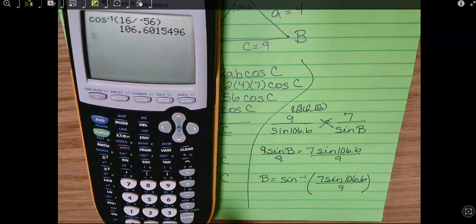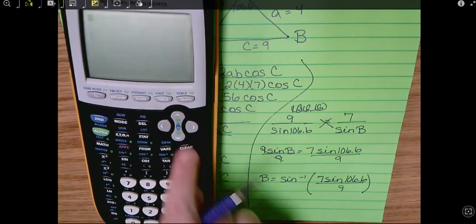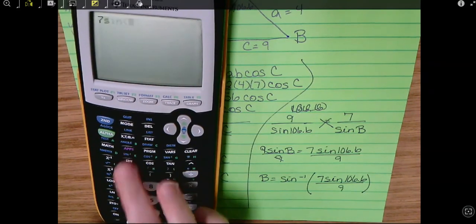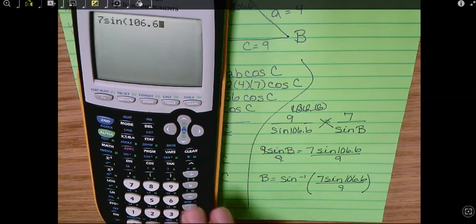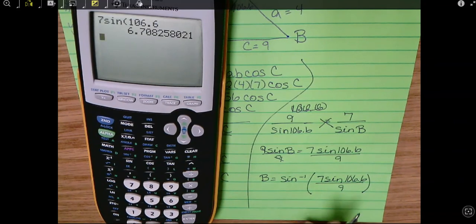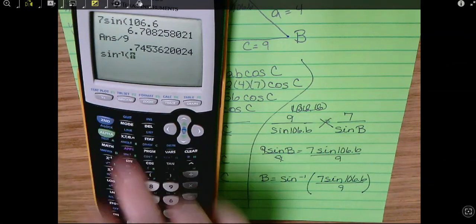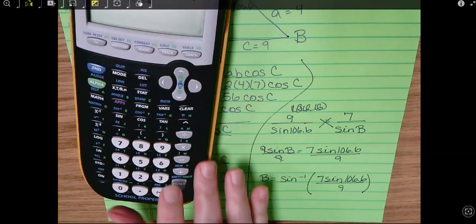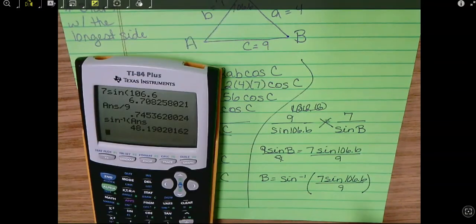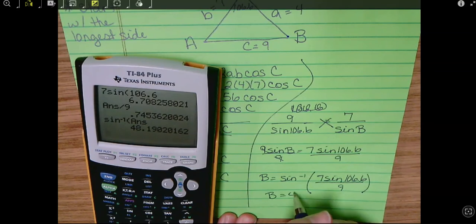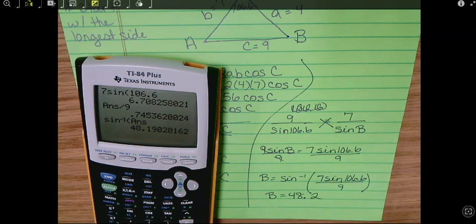Okay. Calculator, clear, clear, clear. Type just the numerator in. So 7 sine of 106.6, enter. Divided by 9, enter. Second sine, second answer negative. And I get B is 48.2.